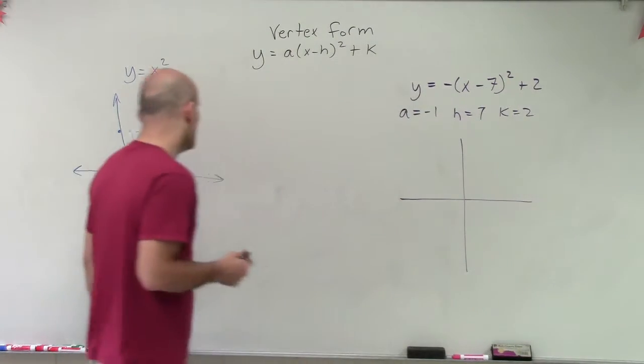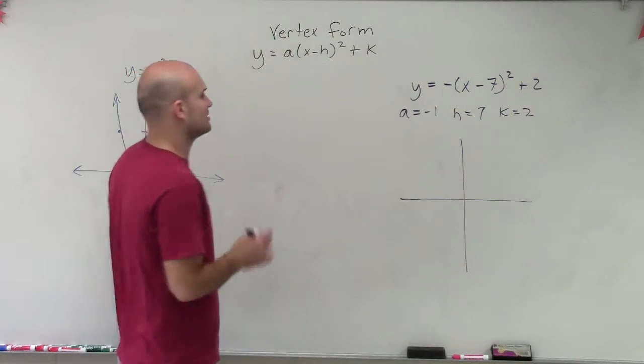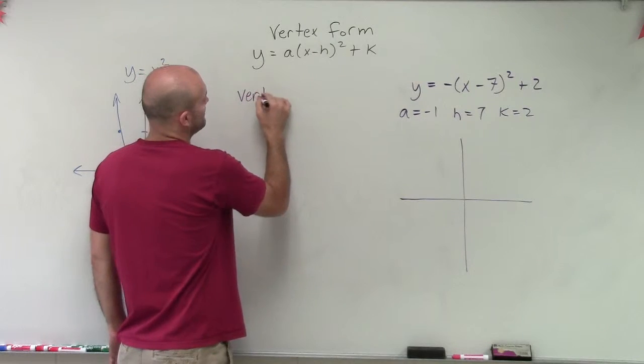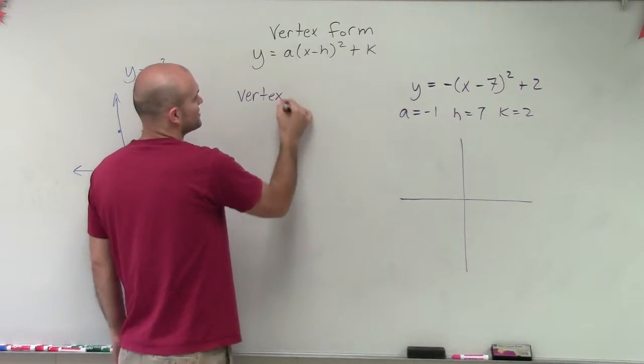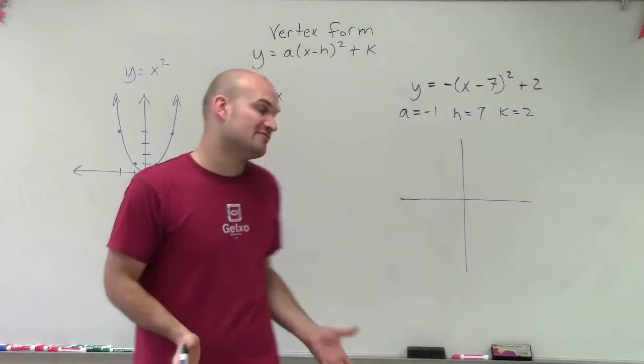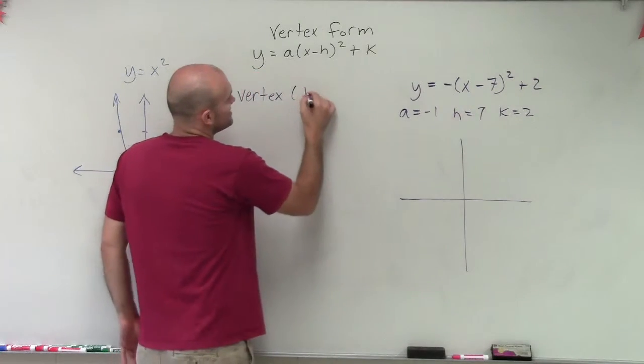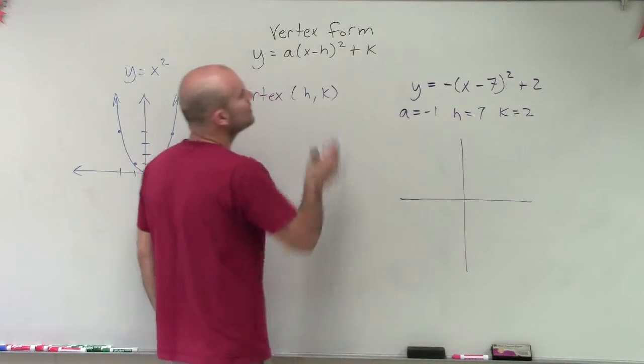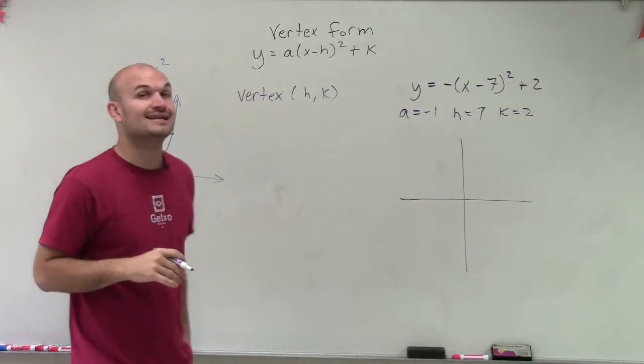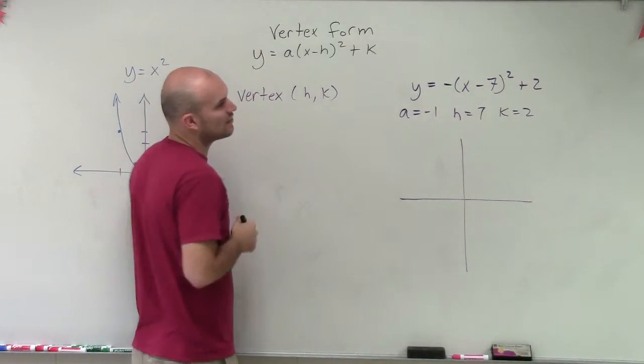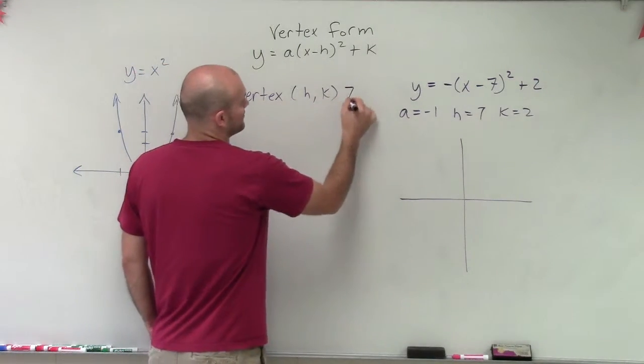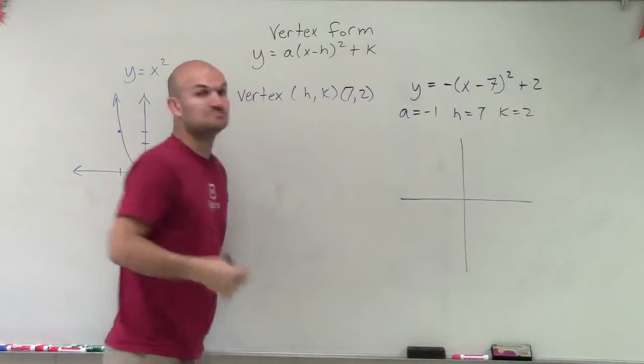All right, so the easiest thing, I think, to do is determine what the vertex is. And when you have a vertex, a lot of times what I'm calling this vertex form is because we can easily identify the vertex. And the vertex is simply just h comma k when your quadratic is in this format. So we can say our vertex is going to be 7 comma 2. Done.